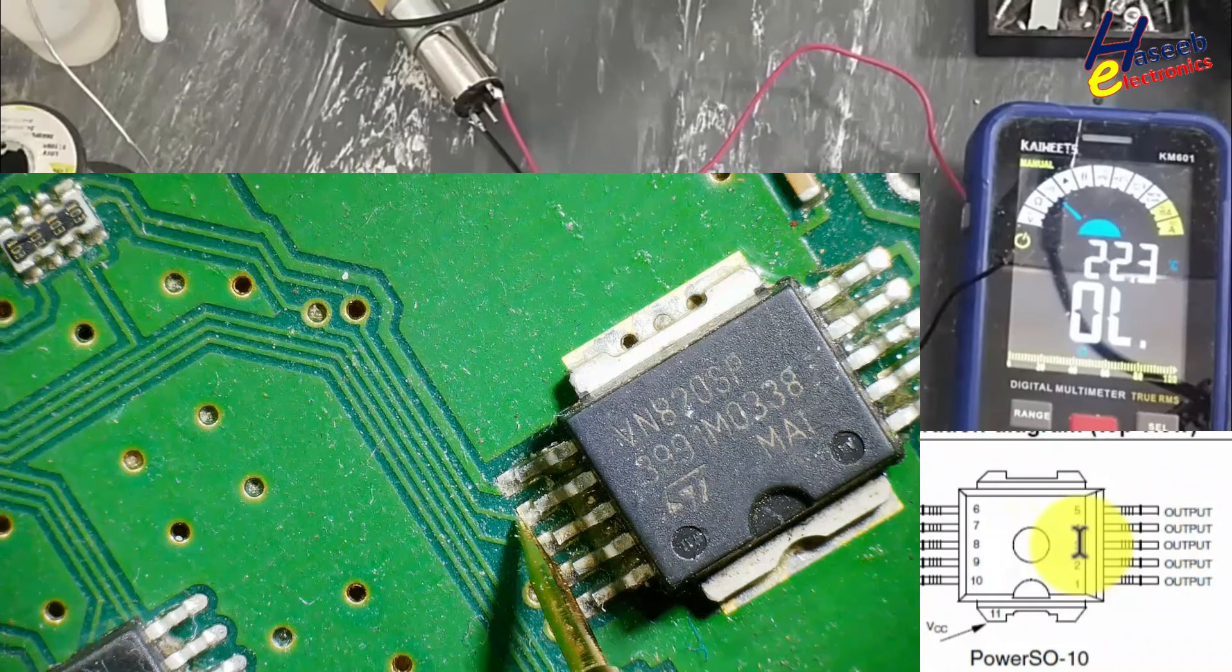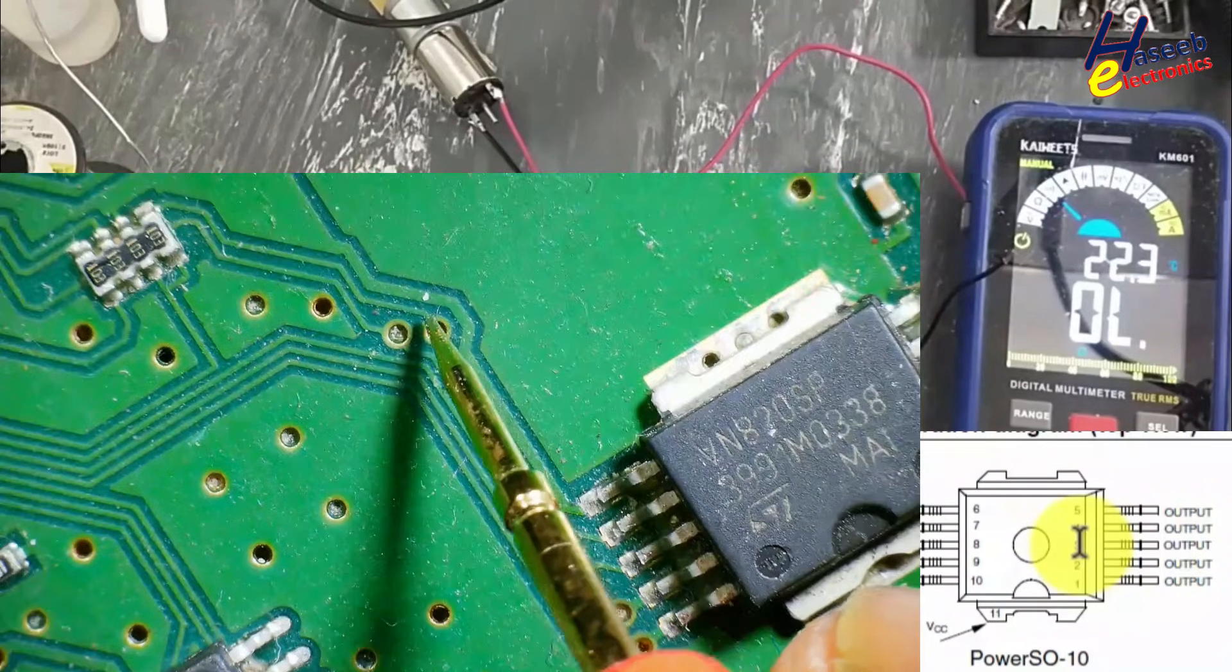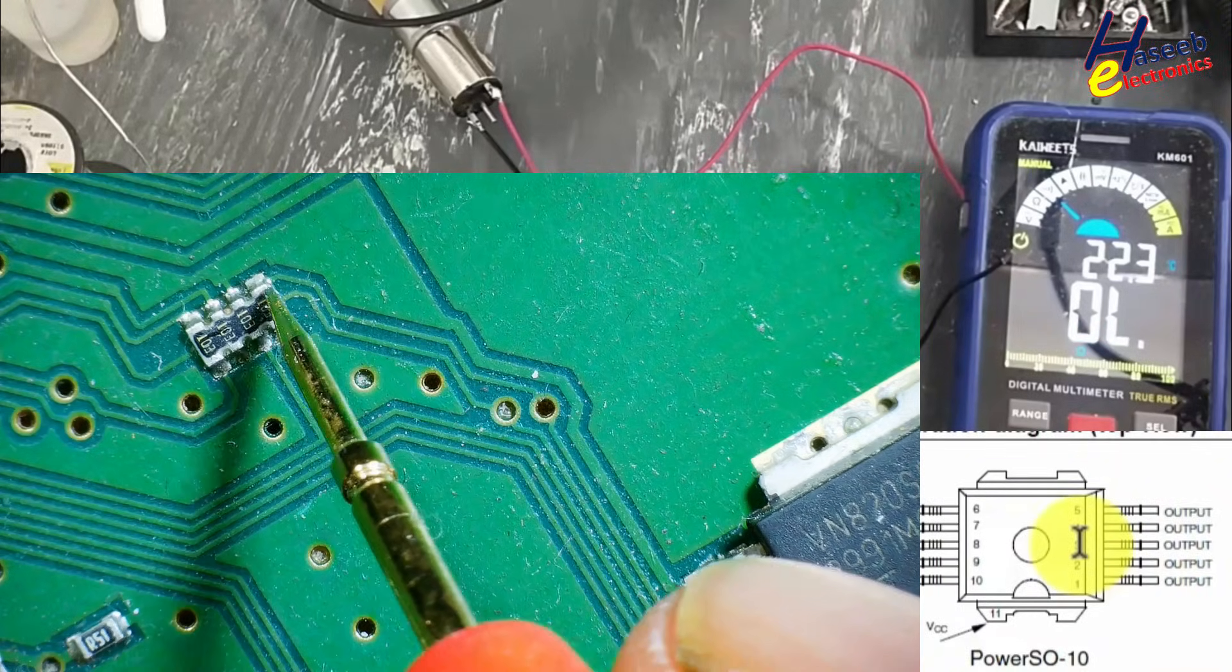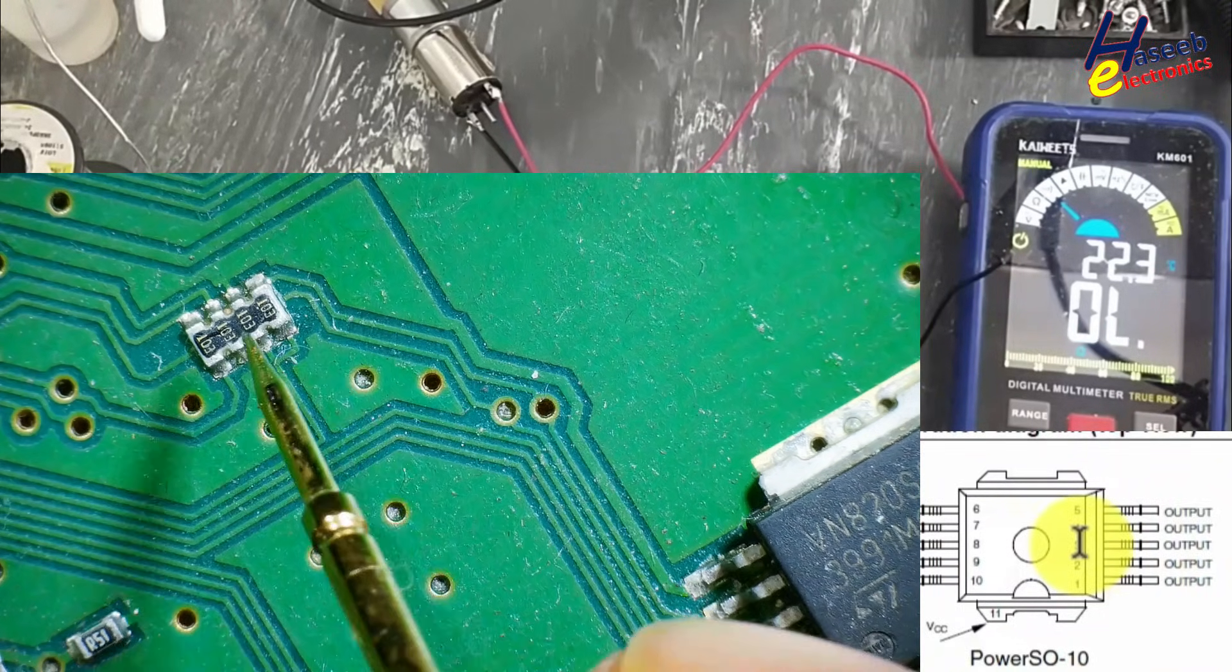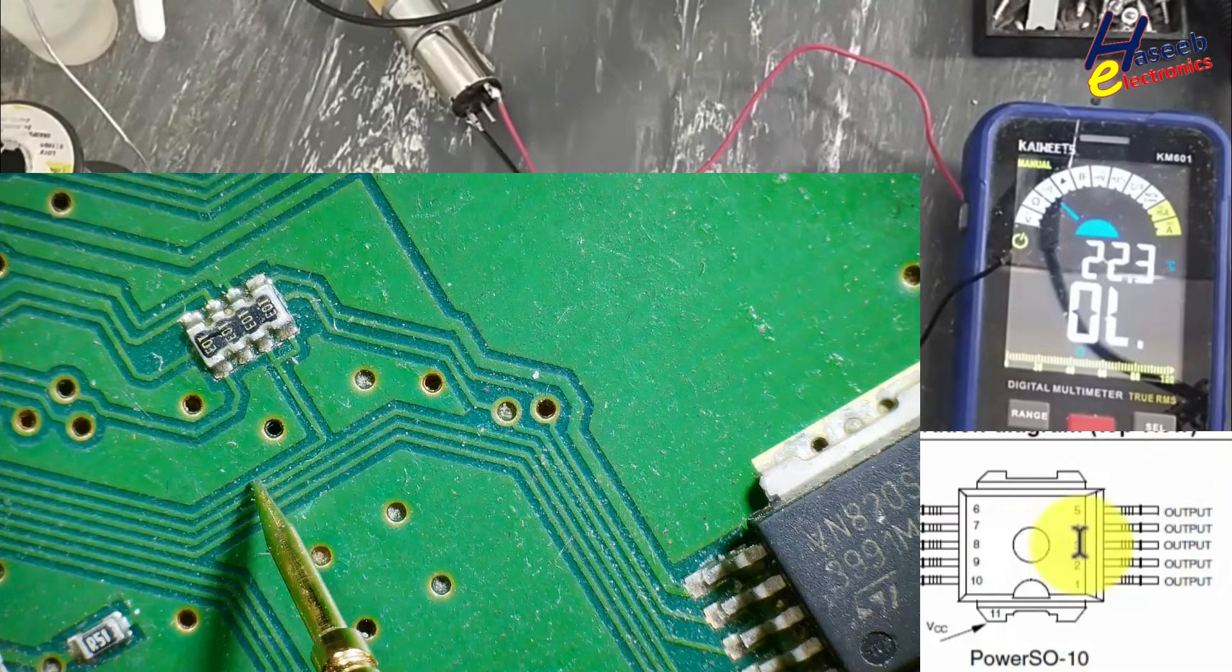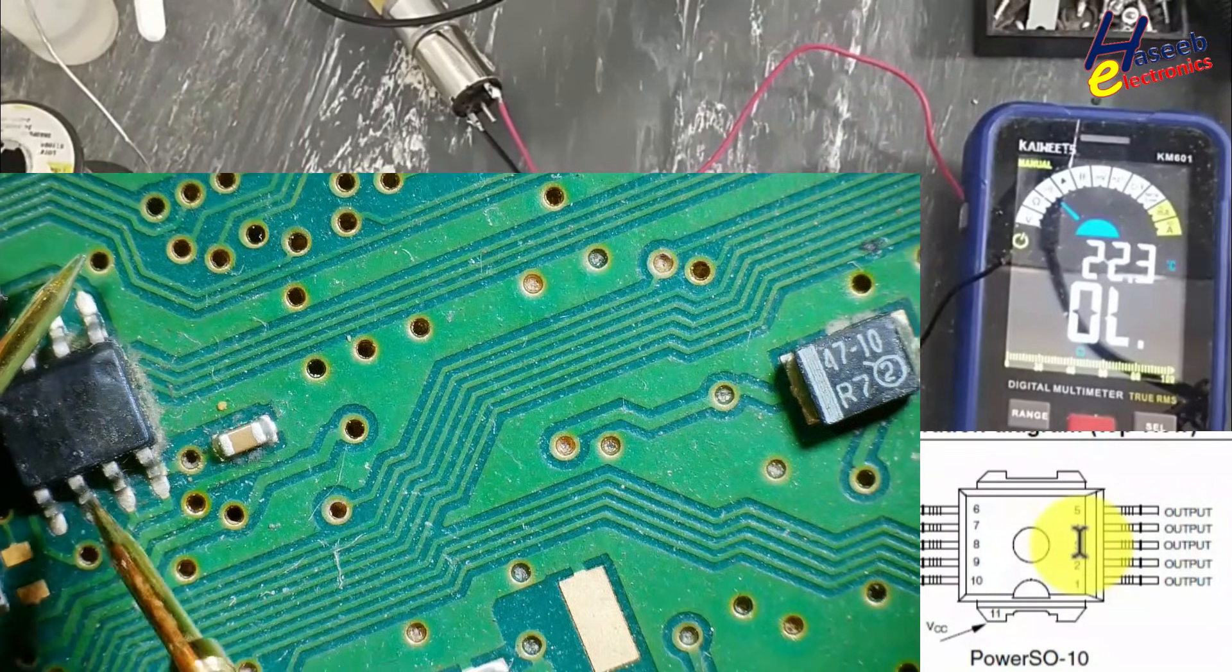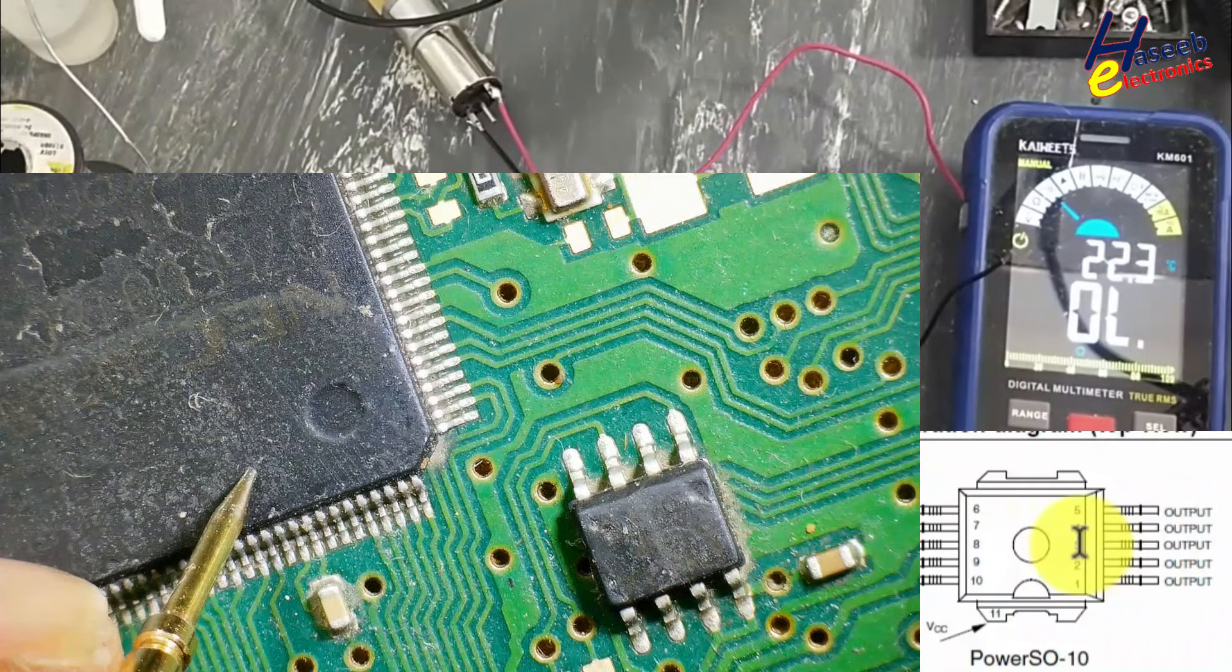Next, the signal - this one is reaching at this PCB rivet and then here is a resistor network. This side is coming from the microcontroller.